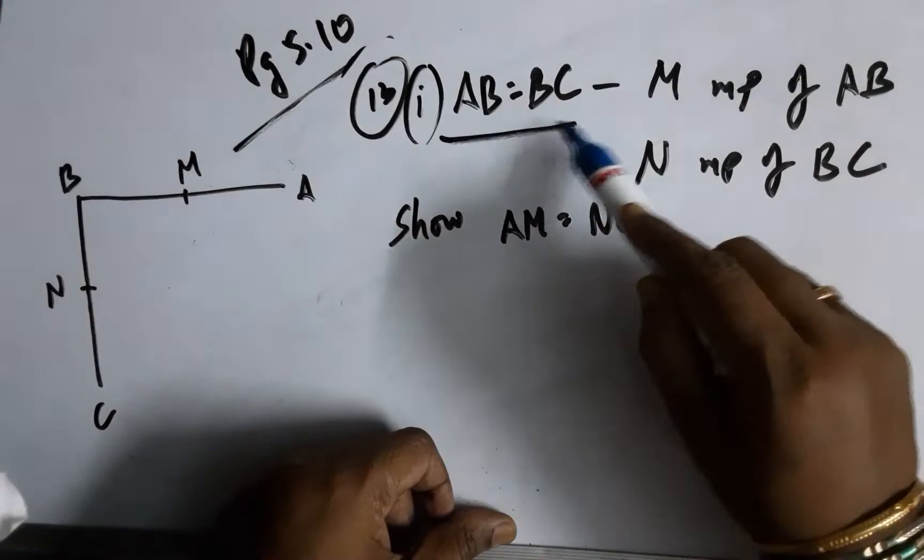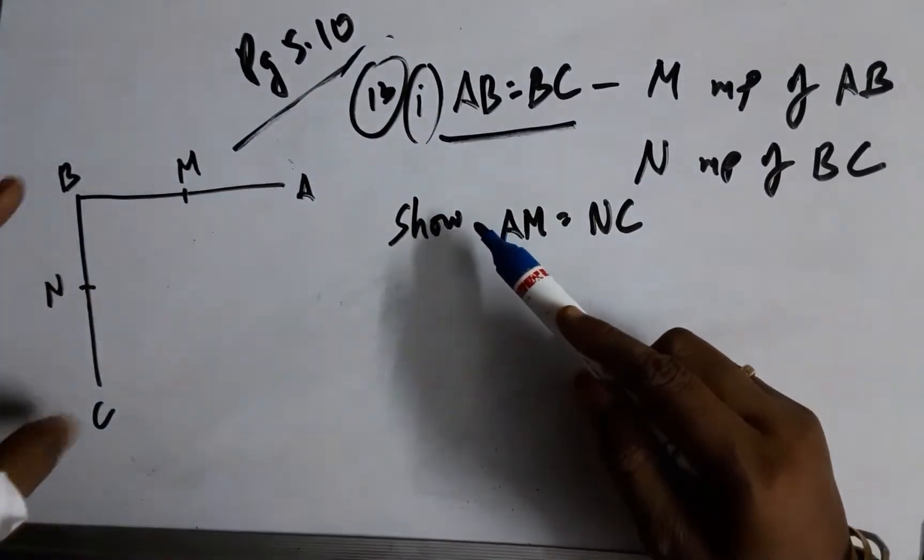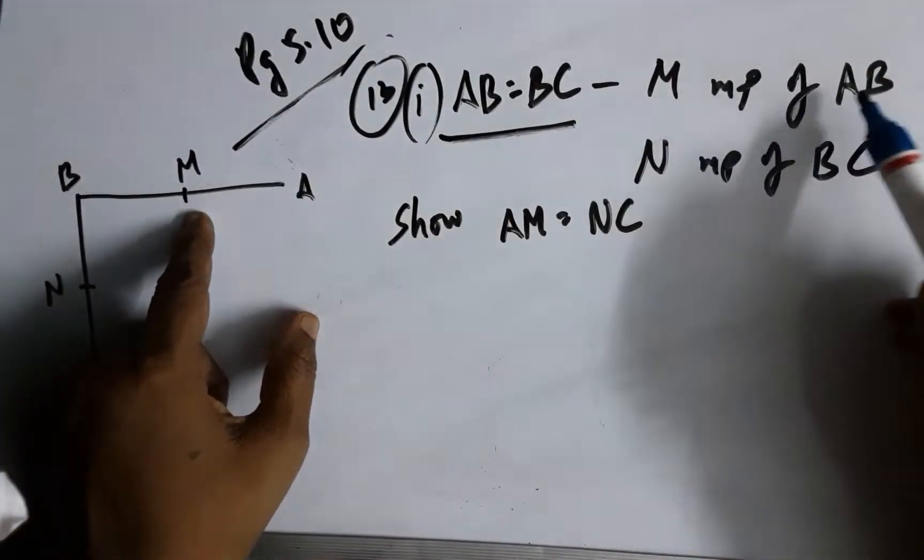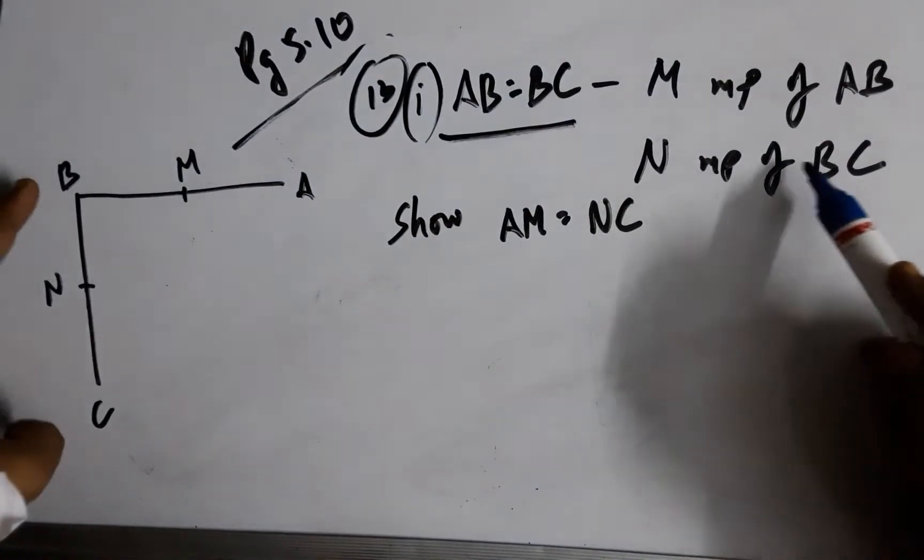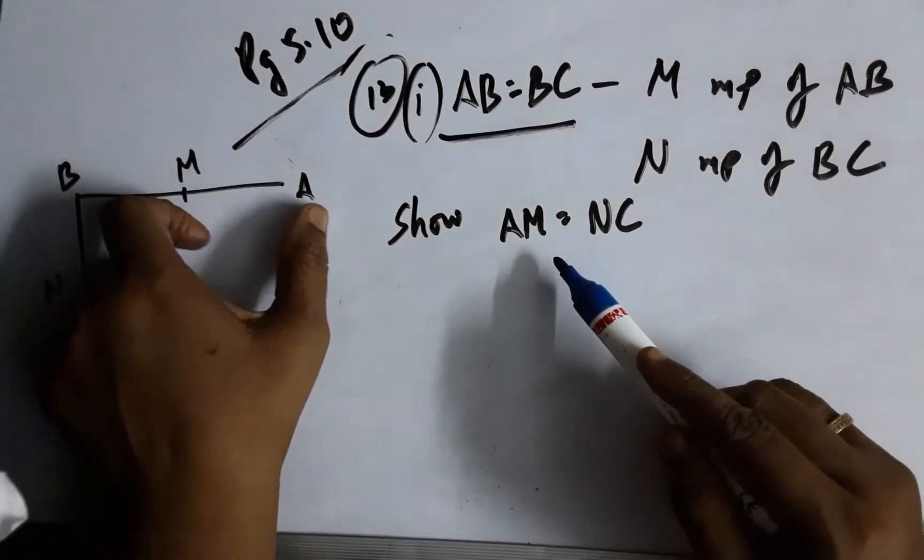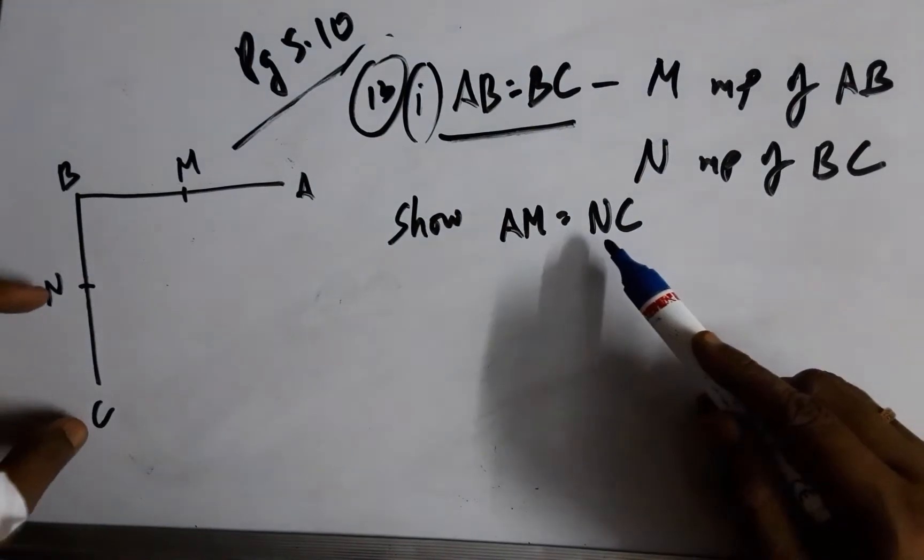You can see it has been given that AB equals BC and M is midpoint of AB and N is midpoint of BC. Now we are supposed to prove that AM equals NC.